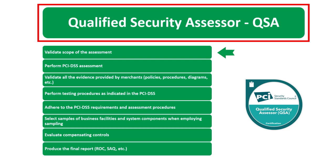The QSA first validates the scope of the assessment — checking the PCI Security Standards Council's scope guidance document. This is normally the first step in a PCI DSS assessment, ensuring all systems and controls that need to be included are actually included. The QSA will also review network diagrams and cardholder data flow diagrams as the basis for the initial scoping meeting.